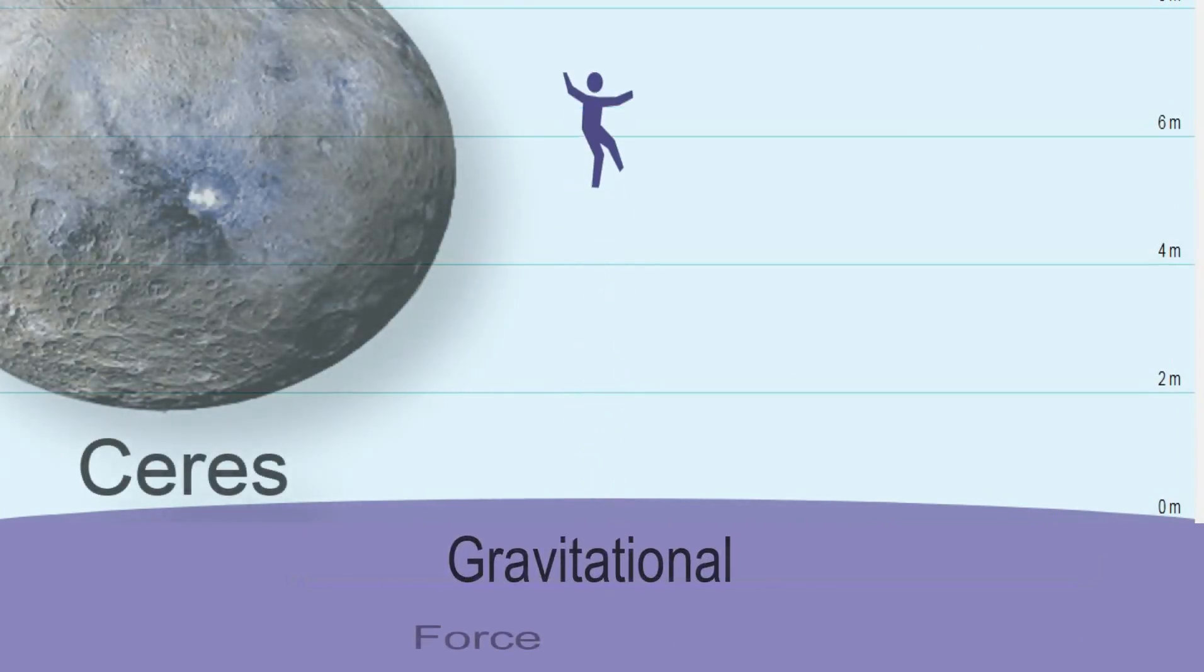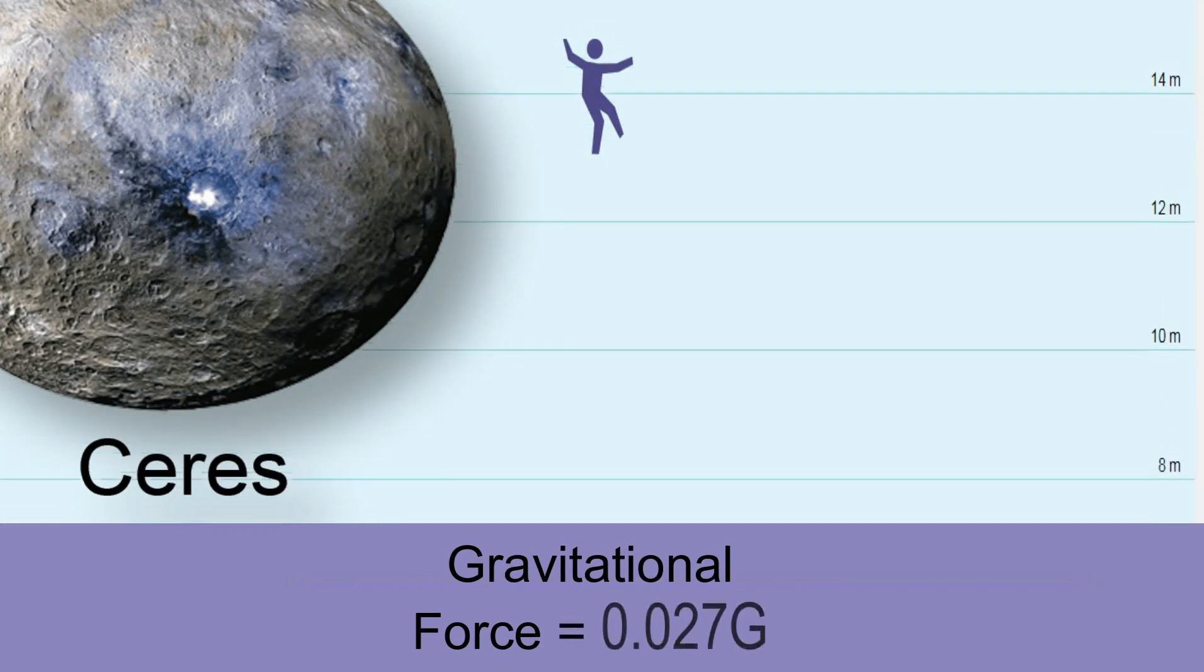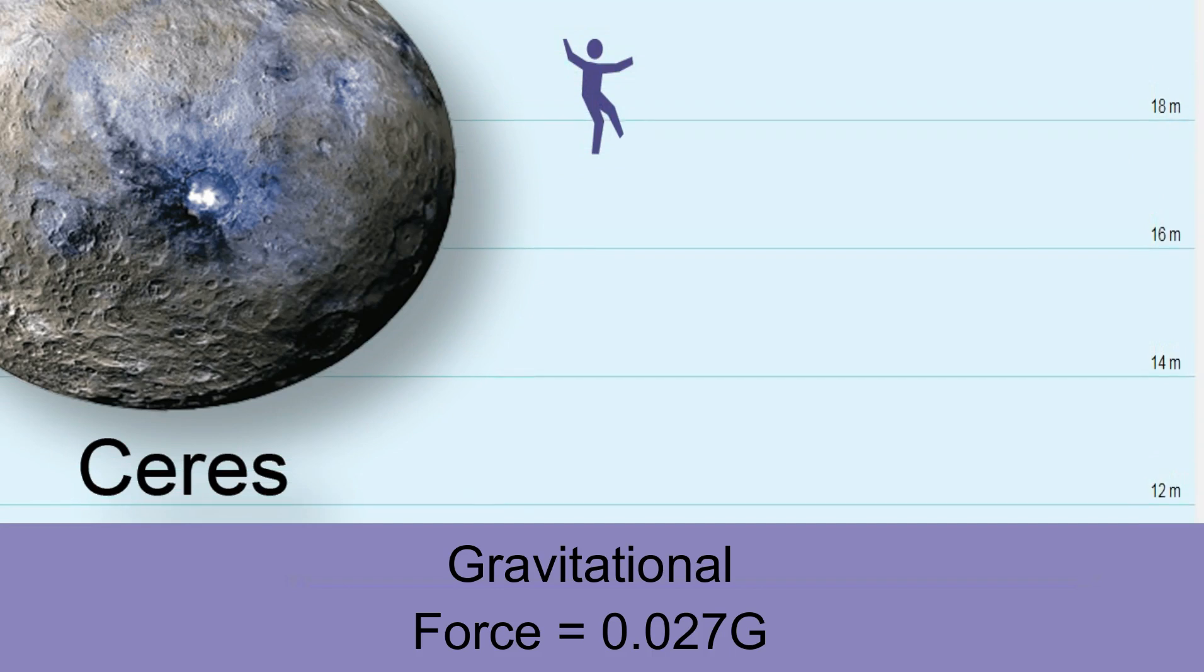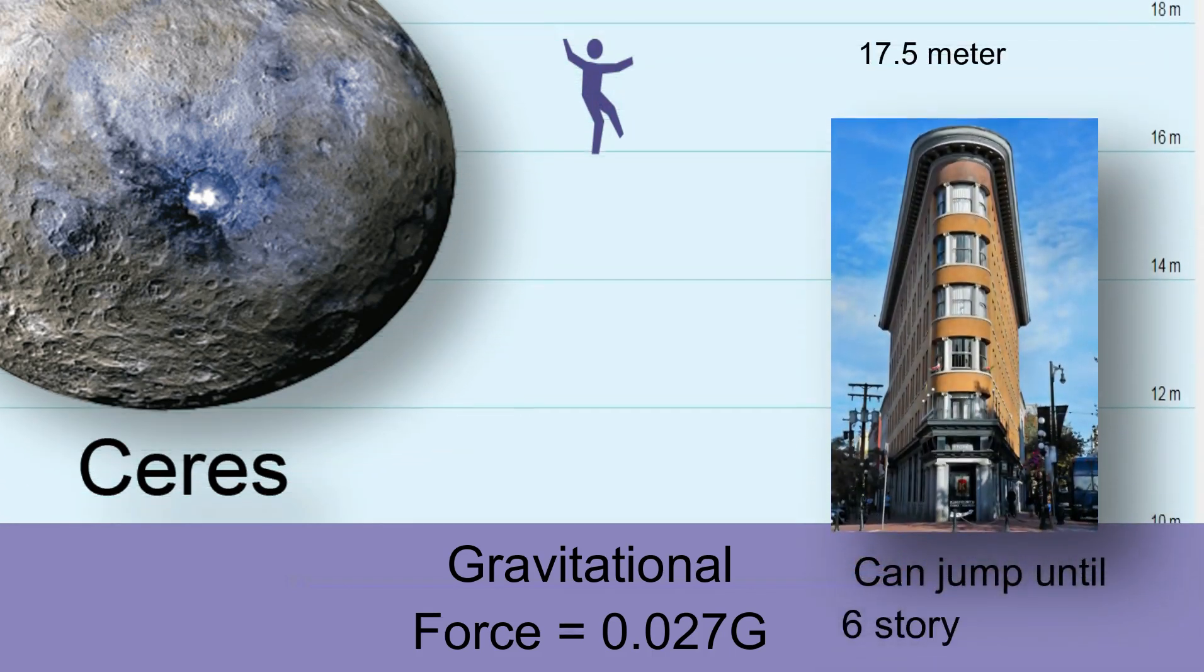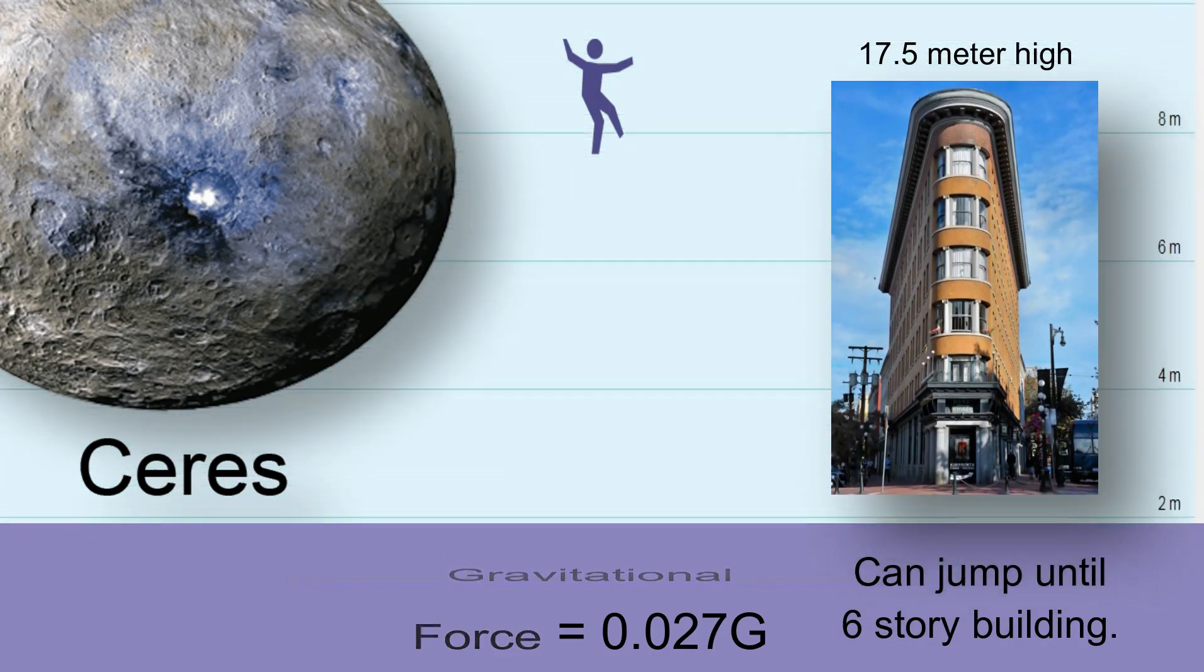Ceres: It was promoted to dwarf planet from asteroid in 2006. It has mysterious but beautiful bright blue spots. The gravitational force on Ceres is 37 times lesser than the Earth. On Ceres, you can climb six-story buildings just like Spider-Man.